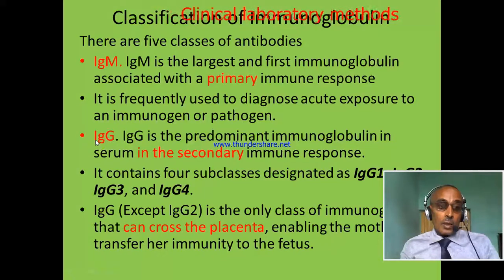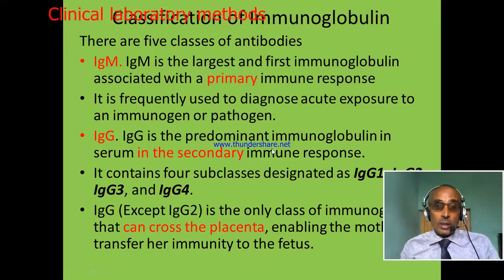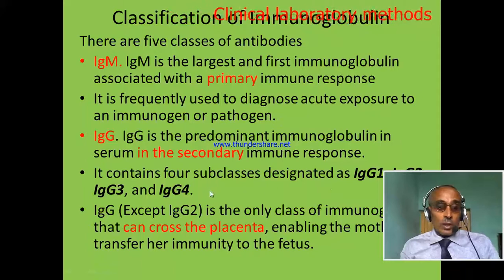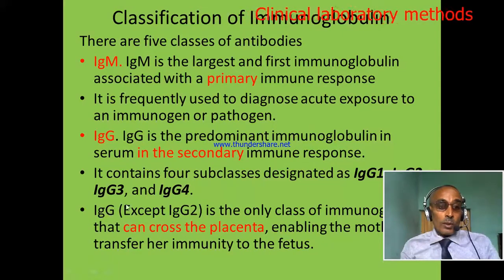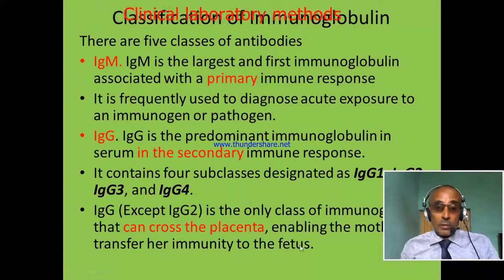The second is IgG, or immunoglobulin G. It is predominantly produced during the secondary immune response. It contains four subclasses: IgG1, IgG2, IgG3, and IgG4. Immunoglobulin G has a special characteristic: since it is small in size, it can cross the placenta from the mother to the fetus and protect the fetus from infection.